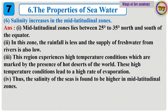Question 6: Salinity increases in the mid-latitudinal zones. Answer: Mid-latitudinal zones lie between 25 degrees to 35 degrees north and south of the equator. In this zone, the rainfall is less and the supply of fresh water from rivers is also low. This region experiences high temperature conditions, marked by the presence of hot deserts of the world. These high temperature conditions lead to a high rate of evaporation. Thus, the salinity of the seas is found to be higher in mid-latitudinal zones.